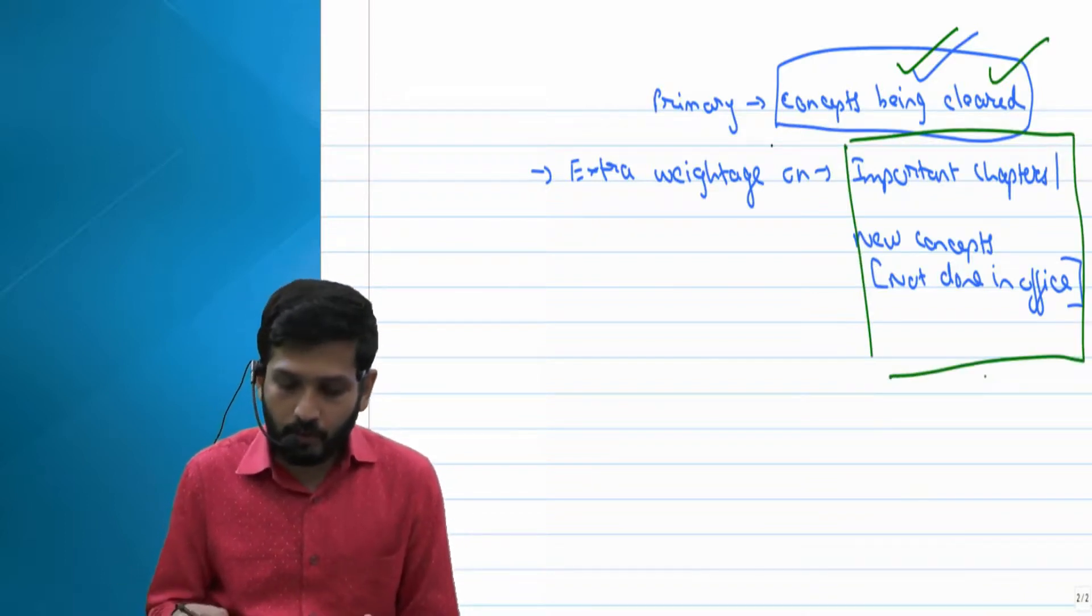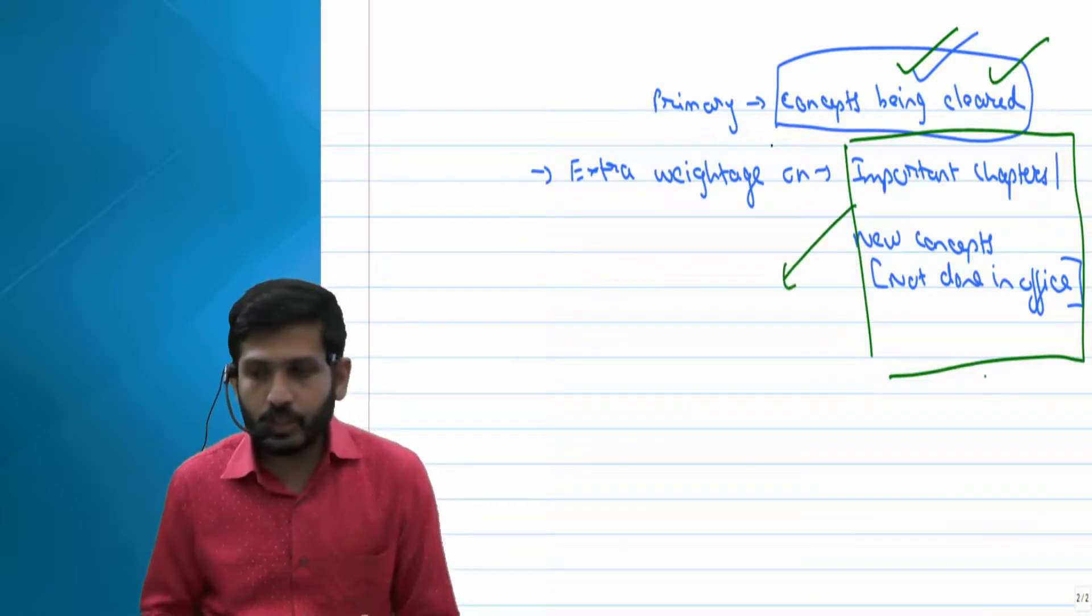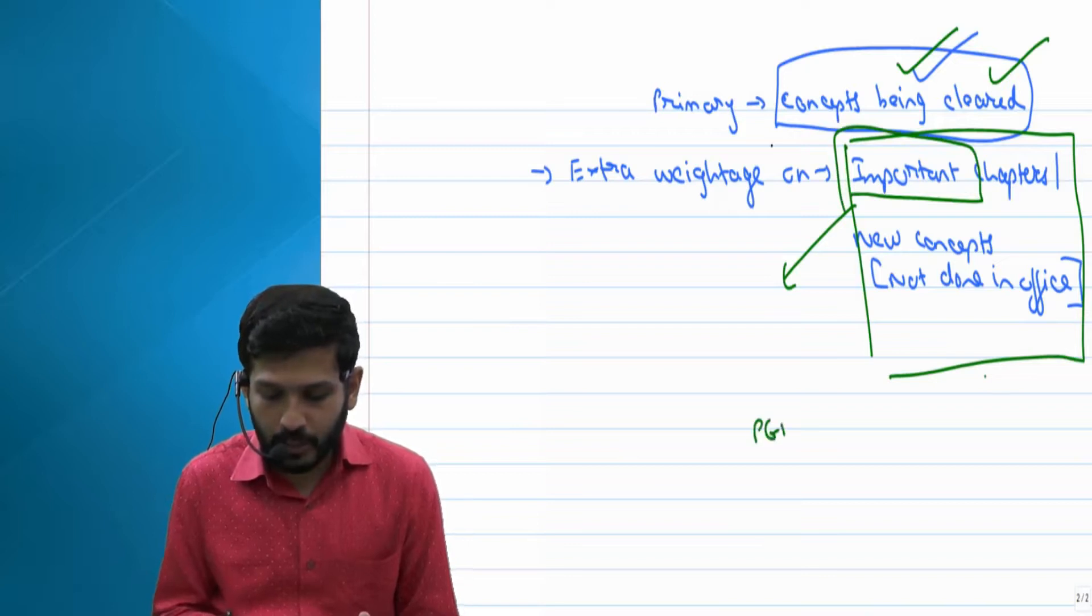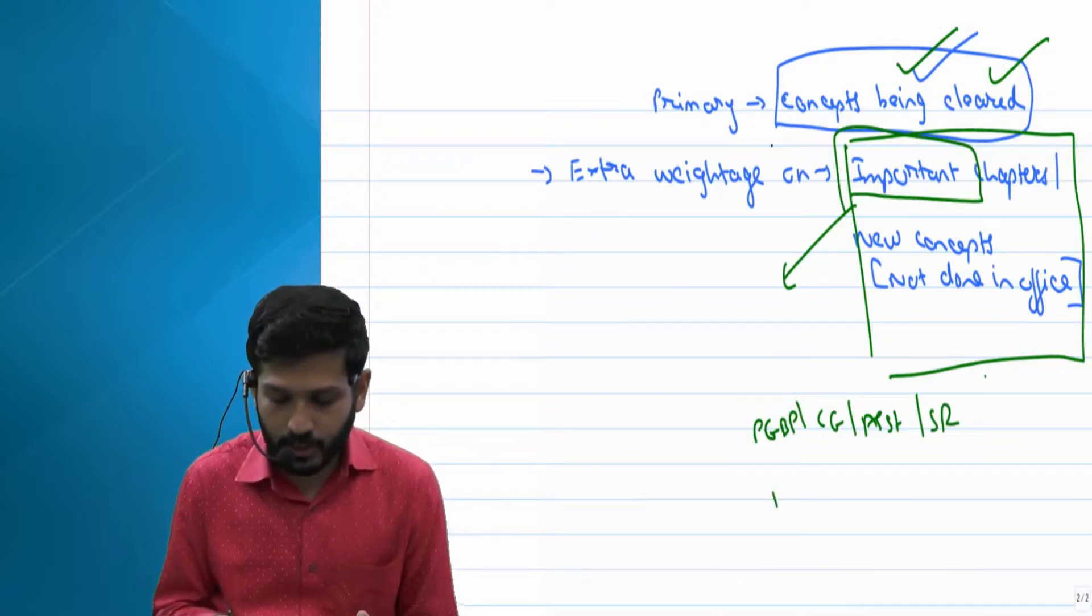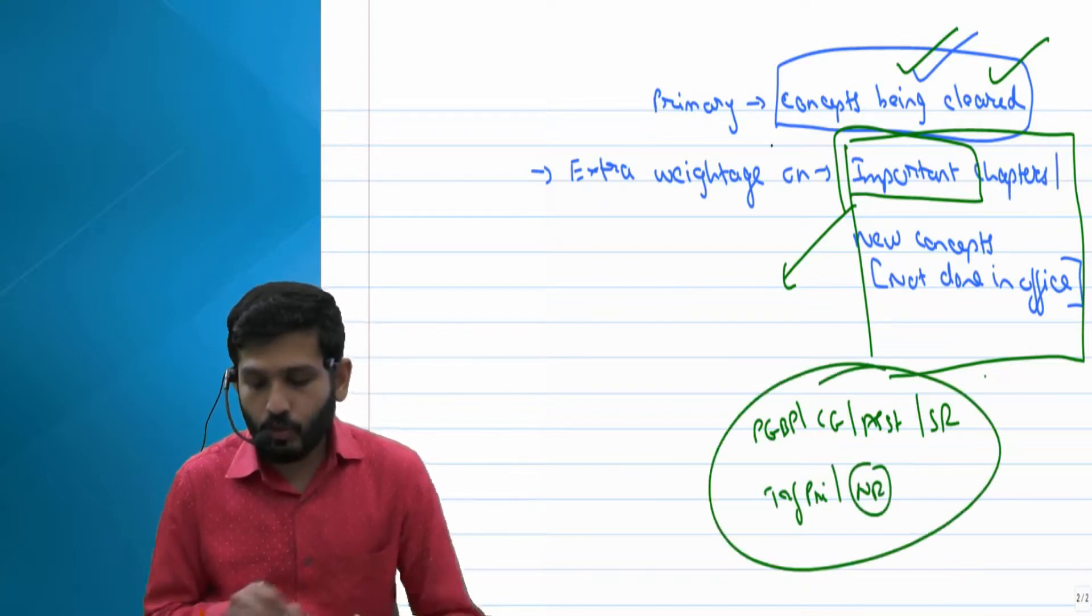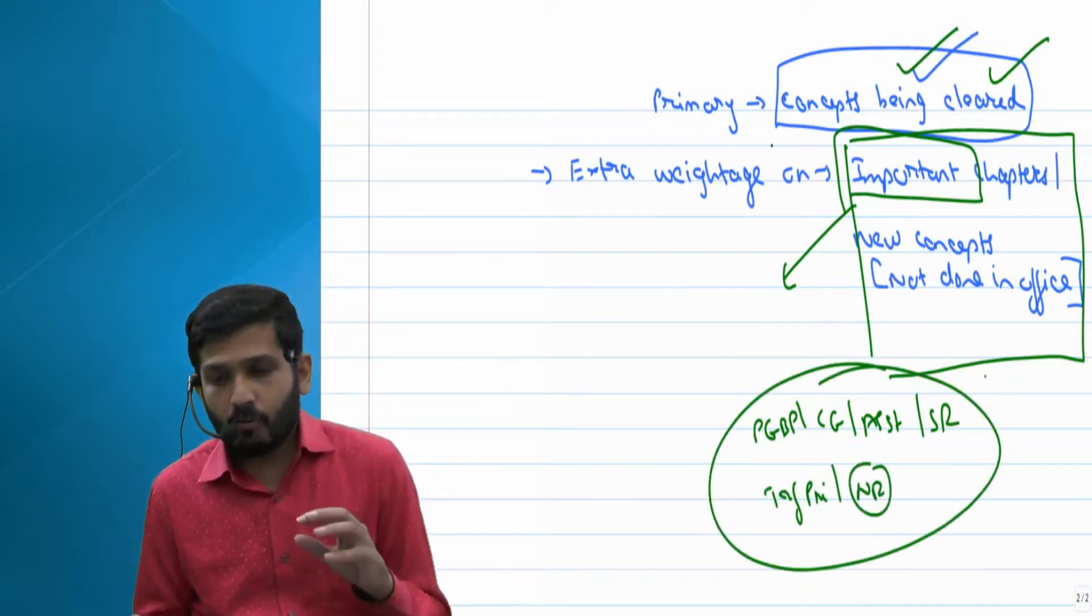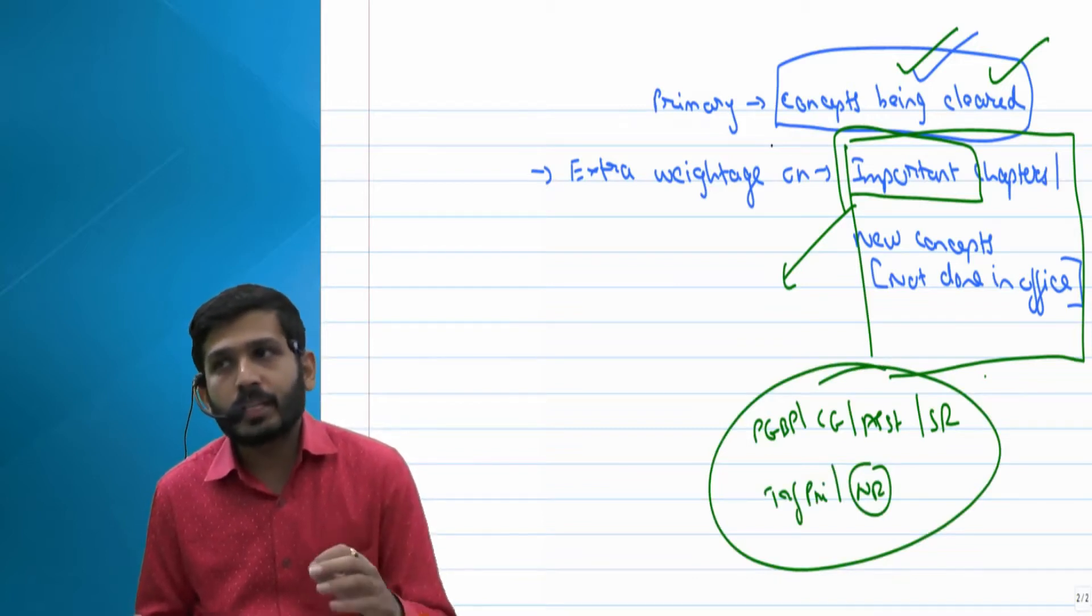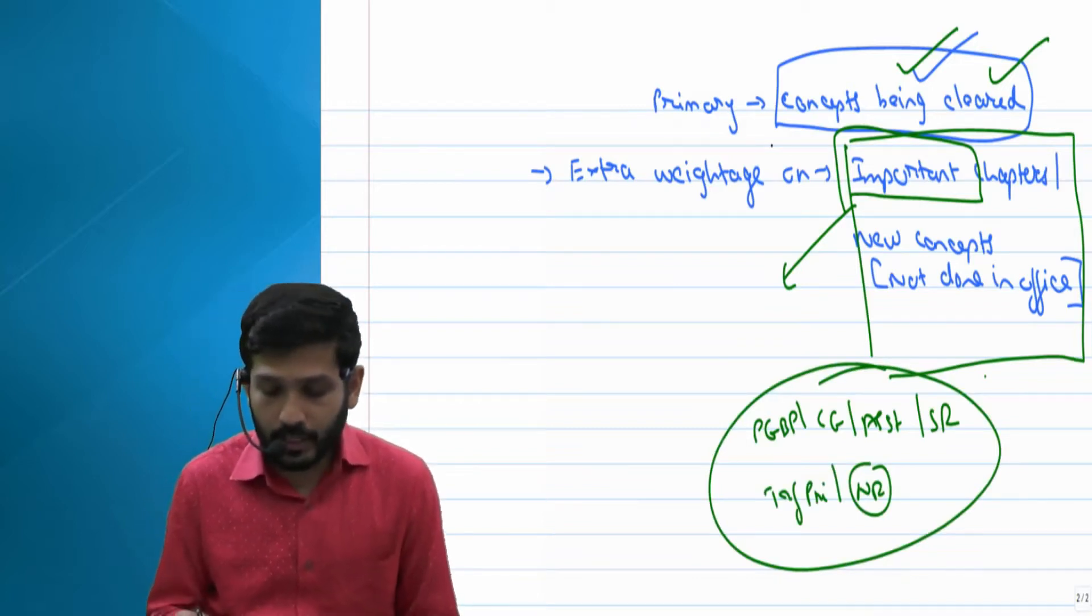Now when we will be discussing all the chapters, whichever chapters are most important like PGBP, capital gain, assessment procedure, special rates, and in non-resident taxation, transfer pricing, all this will obviously get more weightage. We will spend more time in understanding those chapters.